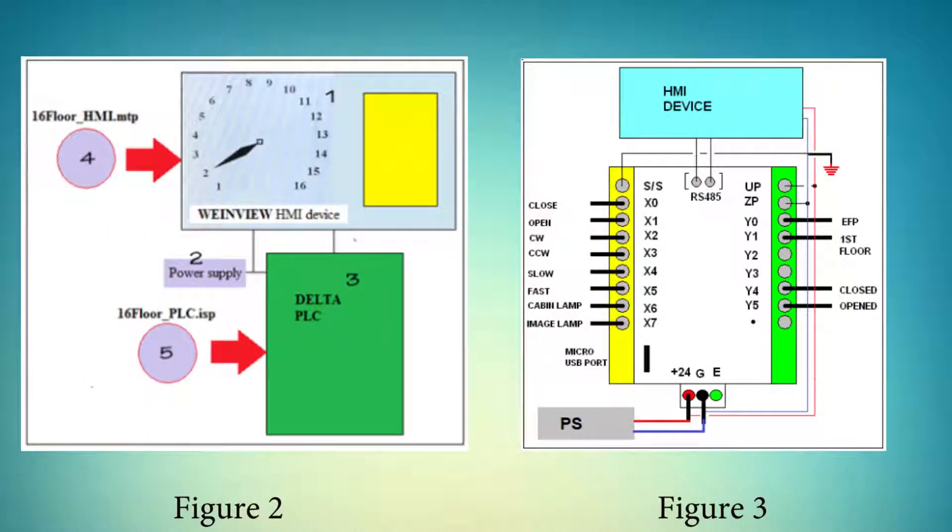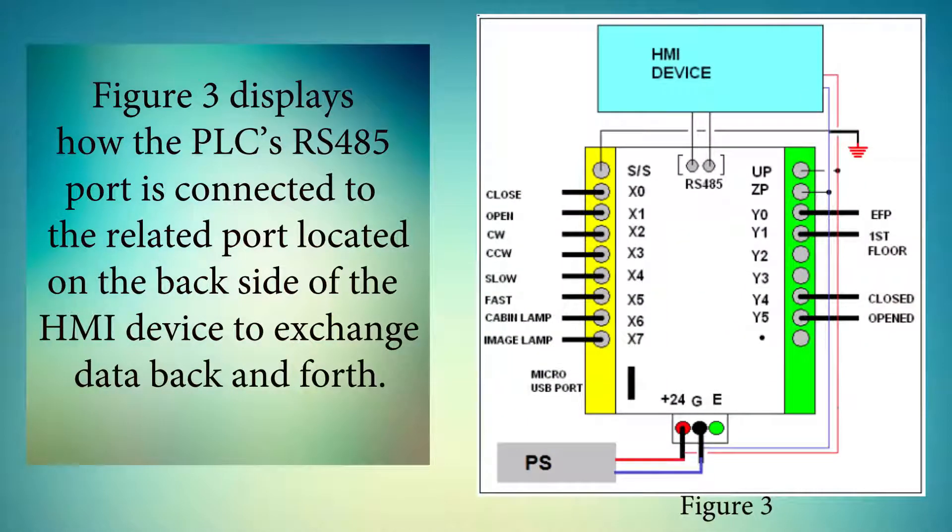Figures 2 and 3 show the hardware and block diagram of the system after download of the HMI control program and connection of the HMI panel to the PLC respectively. Figure 3 displays how the PLC's RS485 port is connected to the related port located on the back side of the HMI device to exchange data back and forth.